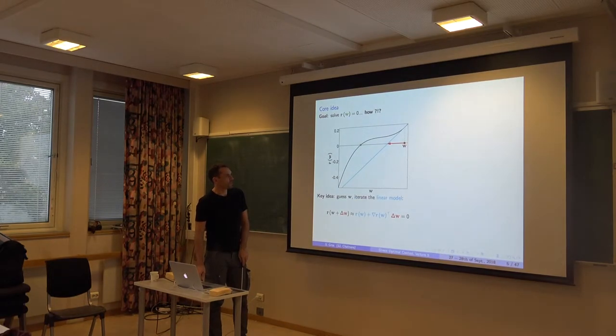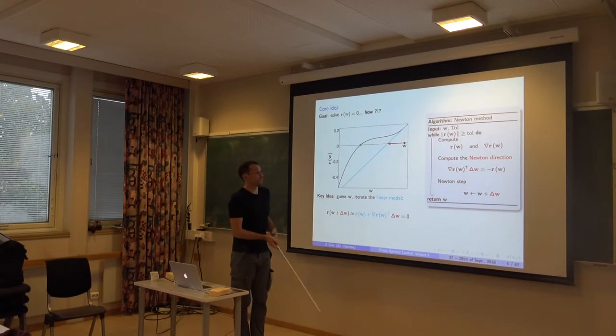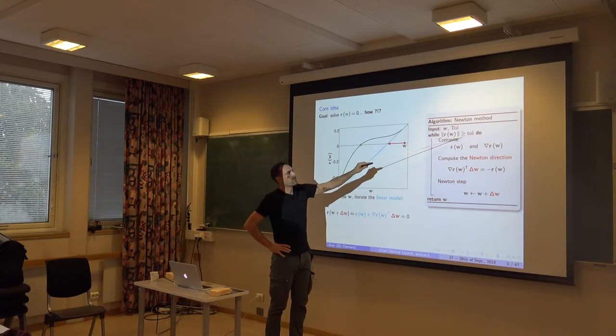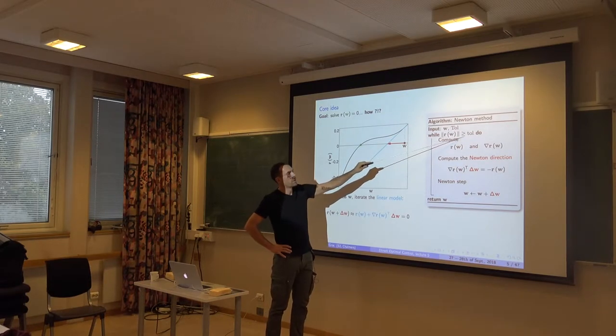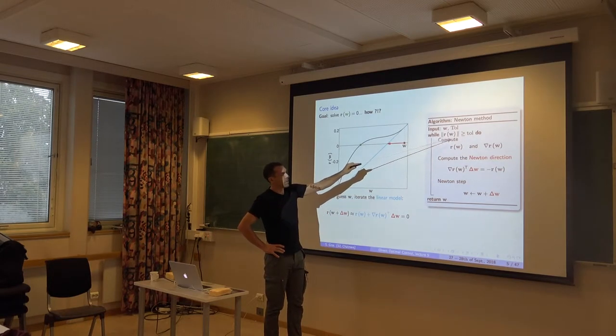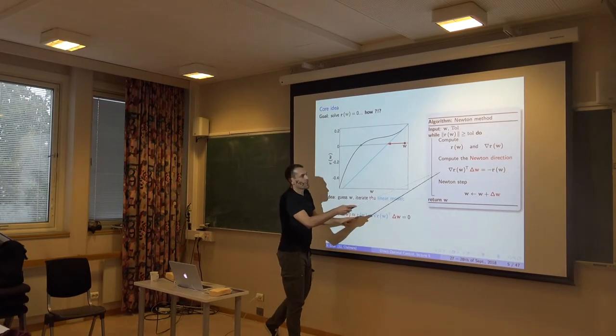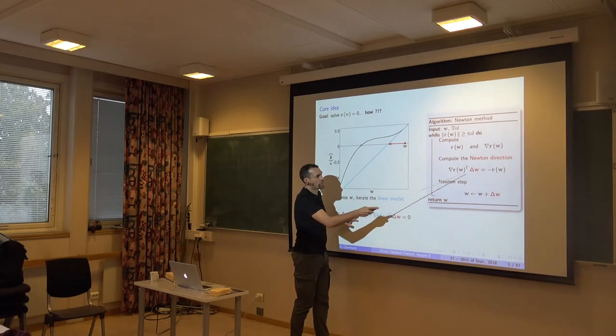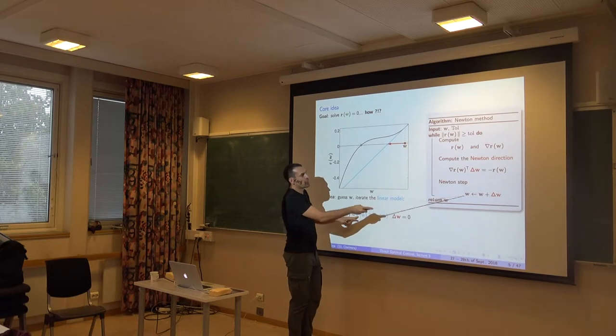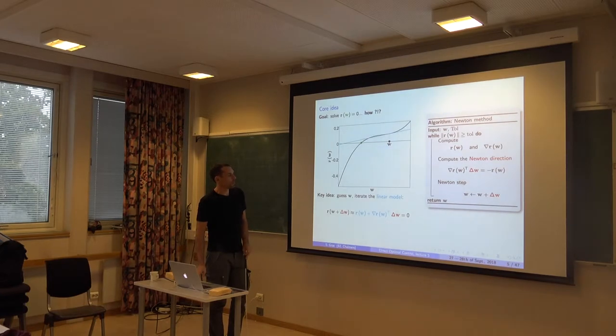And essentially Newton will want to move here. And then you do the same thing again. And the algorithm of Newton, you could write in a few lines in the computer, really. It looks like this. You want some exit criterion. You basically say, if my equations are solved accurately enough, you want to have some tolerance here. You stop. Otherwise, you compute R and its Jacobian here. You solve the linear system. Essentially, you compute the Newton direction, this delta W, how I should change W. You step and you do that again.